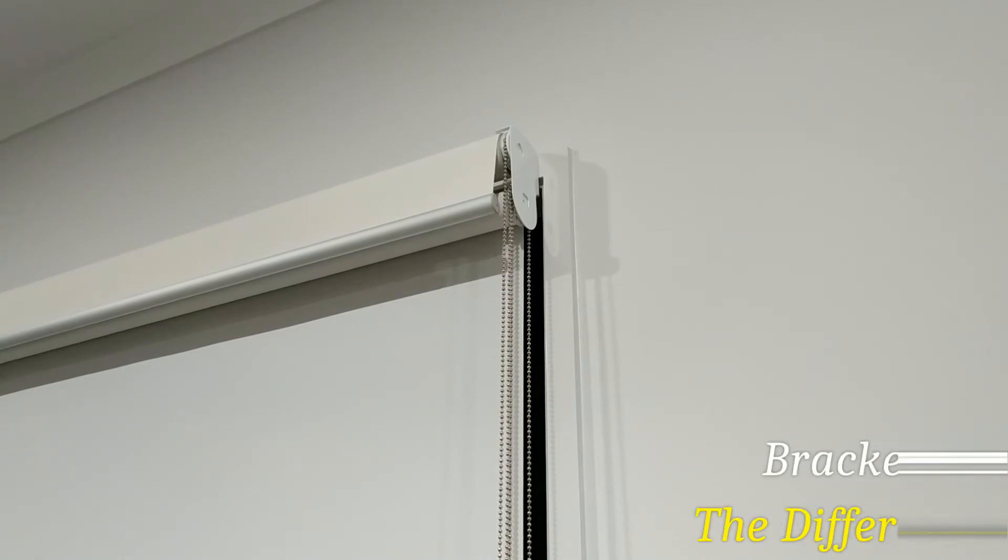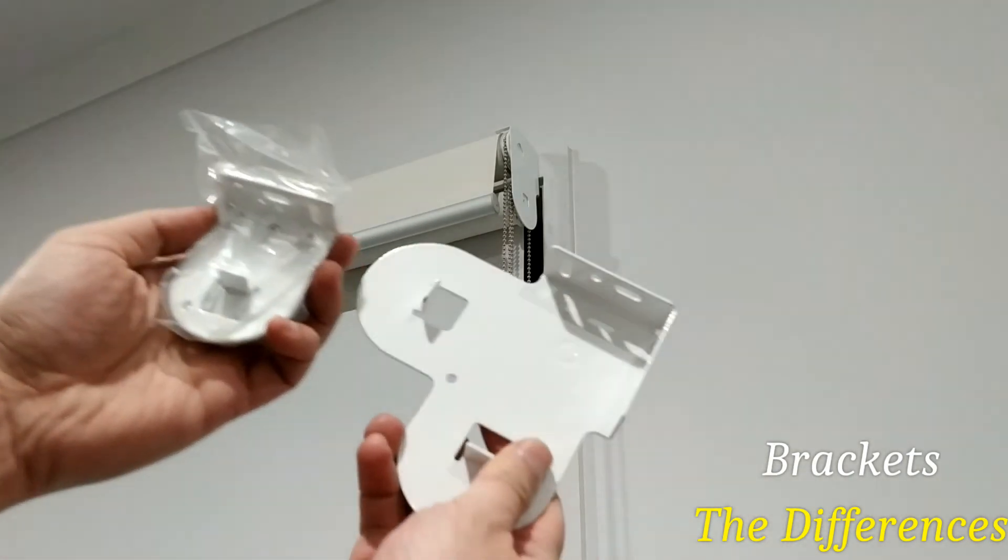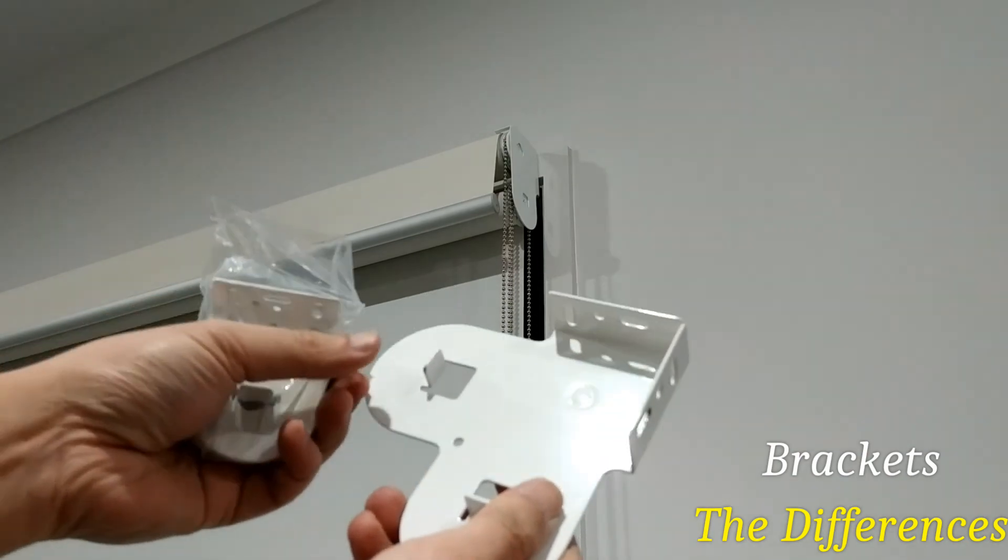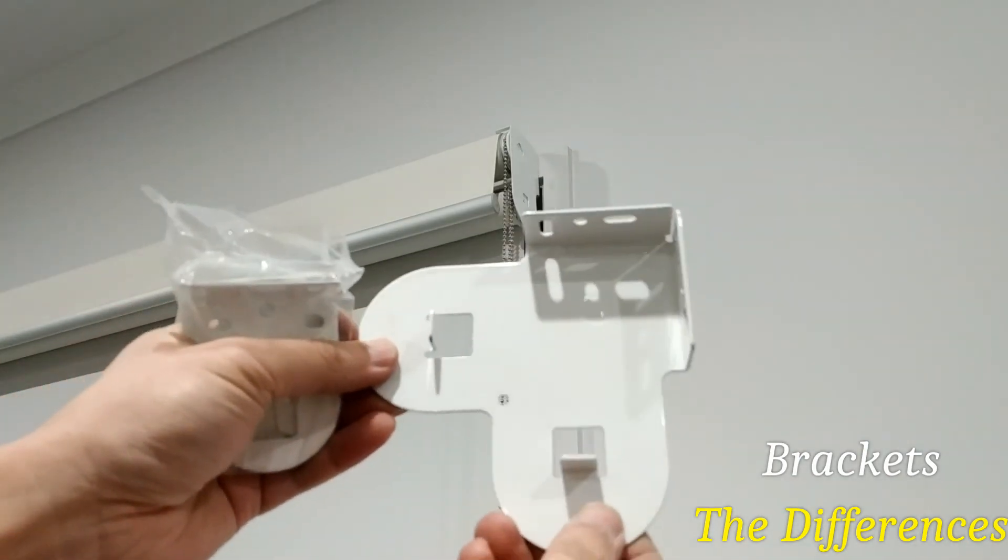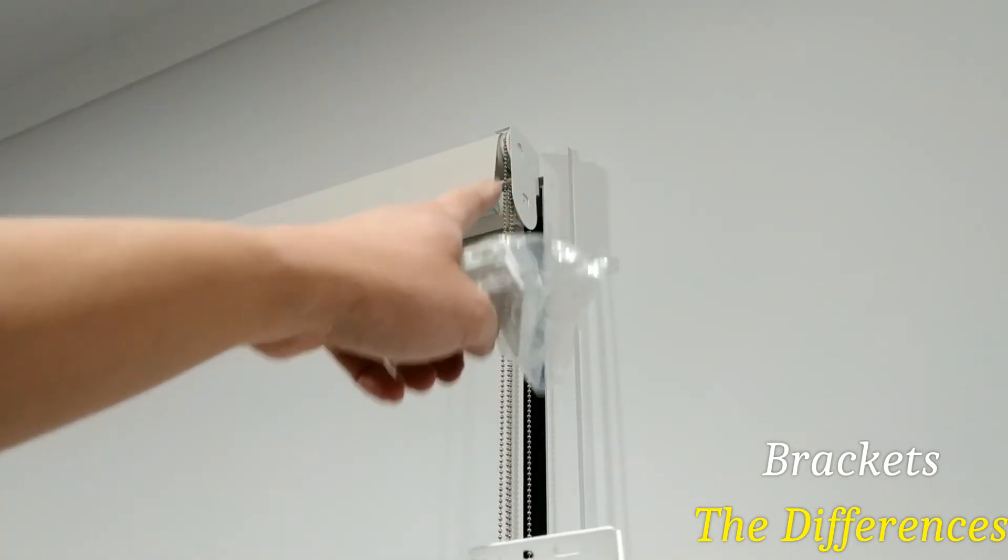In terms of brackets, you either have single brackets or you have double brackets. Obviously double brackets are to have the sunscreen and block outs under one bracket. This is one type of double bracket, but the one over here you see is a slimline one.